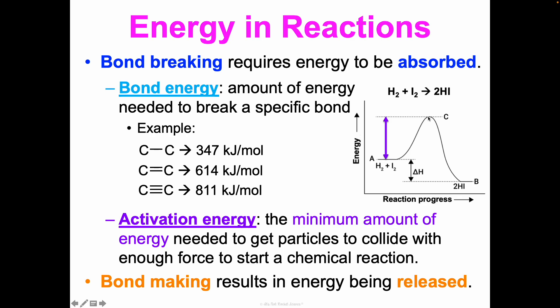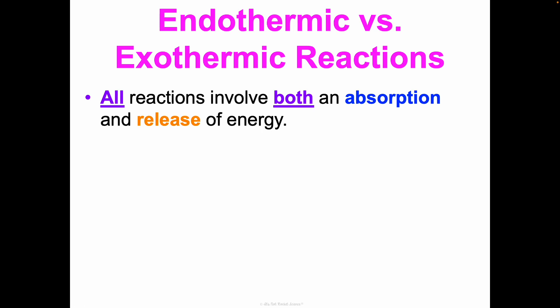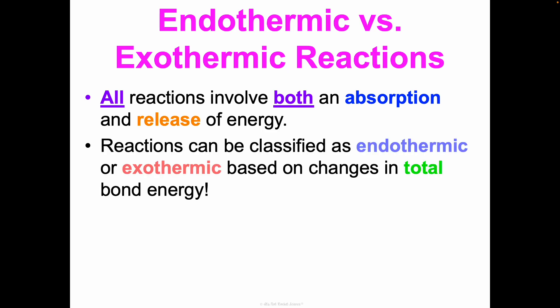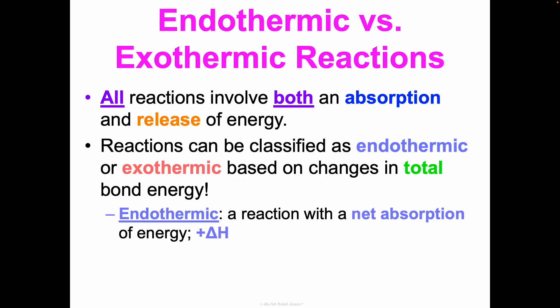The line goes up as energy is added to break bonds, and it declines as energy is released when new bonds form making hydrogen mono-iodide. Looking at the difference between A and B — what we start with and what we end with — that's where we identify a reaction as endothermic or exothermic. All reactions involve both an absorption and a release of energy, so when we classify a reaction, that's based on the net energy change. An endothermic reaction has a net absorption of energy, and we see a positive delta H.